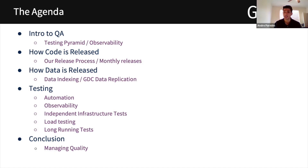For today, our agenda is to give an intro on our quality assurance, providing some insight on the testing pyramid and observability, how code is released — our code release process and monthly releases — how data is released including data indexing and GDC replication, and testing automation, observability, independent infrastructure tests, load testing, and long run tests. We'll conclude with managing quality.